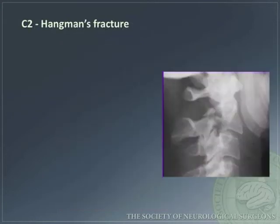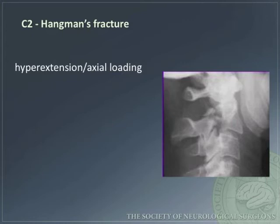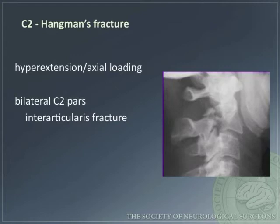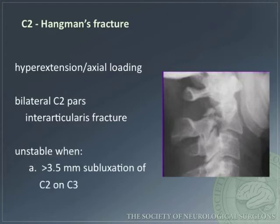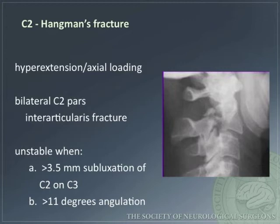C2 hangman's fractures typically result from hyperextension and axial loading. They involve bilateral C2 pars interarticularis fractures. Instability is considered present when there is greater than 3.5 millimeters of subluxation of C2 on C3 and/or greater than 11 degrees of angulation.